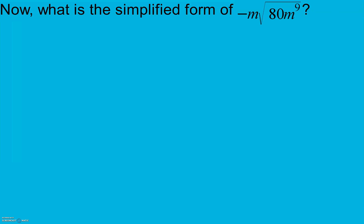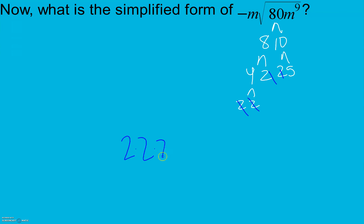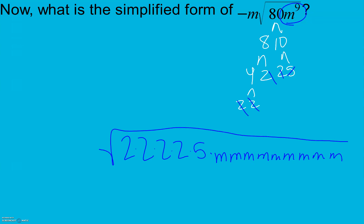Now let's try the next practice problem. I'm going to break 80 down as 8 times 10: 8 is 4 times 2 times 2, and 10 is 2 times 5. So right now I have four 2s and a 5 inside the radical, plus 9 m's inside the radical. Outside here I have a negative m — keep in mind, the number in front is a 1, so it's like negative 1 times m.